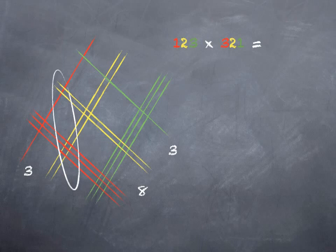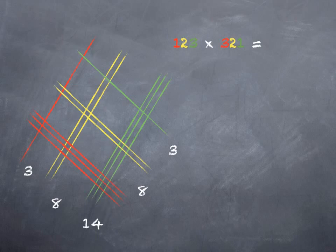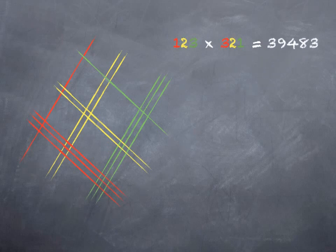Now I have red and yellow. So that's hundreds and tens, which is going to give me thousands. If you count them up, there are eight of those. And in the middle, I either have red intersecting green, which is ones and hundreds, or I have yellow intersecting yellow, which is tens and tens. Either way, that's the hundreds place. And if you count them up, you end up with fourteen hundreds. Now, just like in regular multiplication, that's a problem. I can't have fourteen in the hundreds place. So that really is one thousand and four hundred. So I take that one, and I bump it over to the thousands place. And I wind up with thirty-nine thousand, four hundred and eighty-three, which happens to be the correct answer.